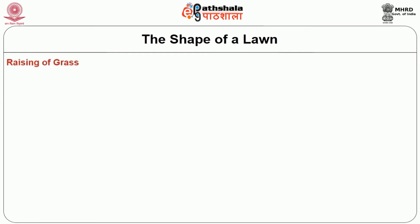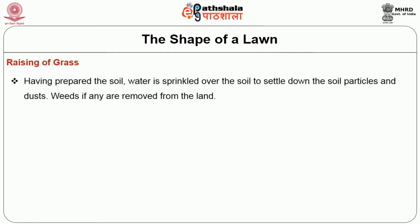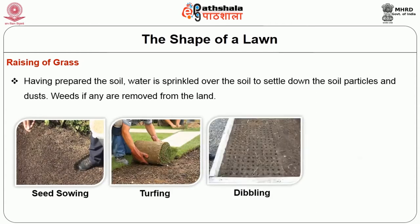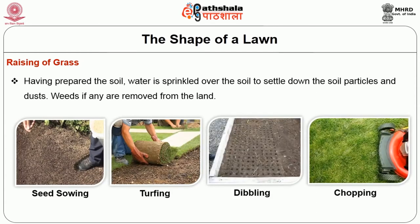The third step is raising of grasses. Having prepared the soil, water is sprinkled over the soil to settle down the soil particles and dust. Weeds if any are removed from the land. Then grasses are planted in the soil in the following ways: seed sowing, turfing, dippling and chopping.